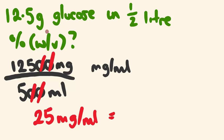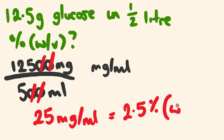Now, what is this as the active ingredient percentage? Instead of multiplying by 10 to go from percentage to milligrams per mil, I'm going backwards — so I divide by 10. 25 divided by 10 gives 2.5% W/V.